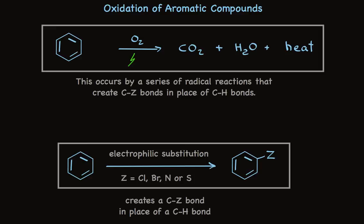As I'll talk about in separate videos, aromatic hydrocarbons undergo electrophilic substitution, not addition. A carbon-hydrogen bond is broken and replaced by a carbon-heteroatom bond. The typical heteroatoms are chlorine, bromine, nitrogen, or sulfur, which means they're all more electronegative than carbon. And so, this is an oxidation.